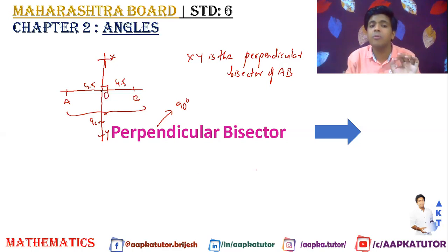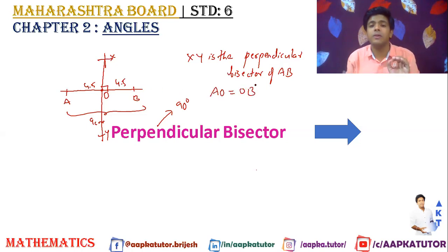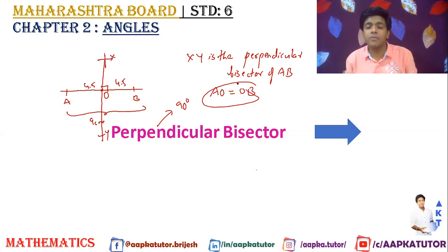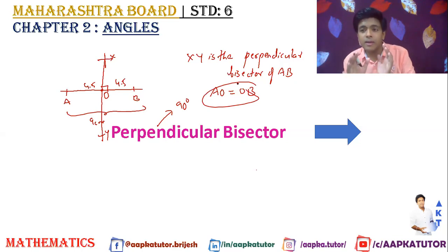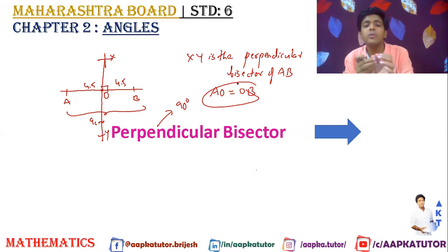The point where XY intersects AB is point O, the point of intersection. So AO becomes equal to OB. The perpendicular bisector XY divides AB into two equal lengths: OA equals OB.